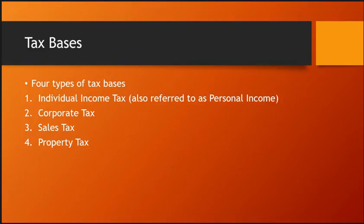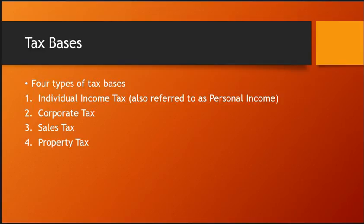Sales tax is pretty self-explanatory: you pay a tax on items you buy. There are some exceptions — if you go to the grocery store and buy food, that's not taxed, because they don't want to make it harder for low-income people to feed themselves. However, prepared food like a cooked chicken from the deli counter is taxed because someone made it for you. That's why McDonald's or Subway has tax on it. Not every state has sales tax — there are about two that don't.